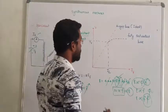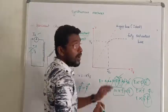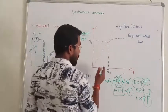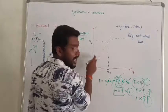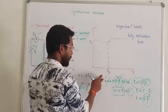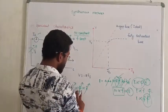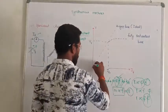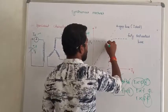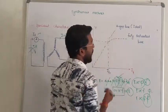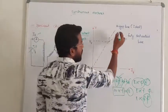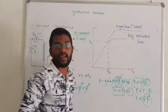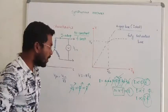If the characteristics come to us ideally, both flux and induced EMF are directly proportional. So the flux versus induced EMF curve becomes a straight line — that is called the air gap line. This characteristic is called the ideal characteristic.